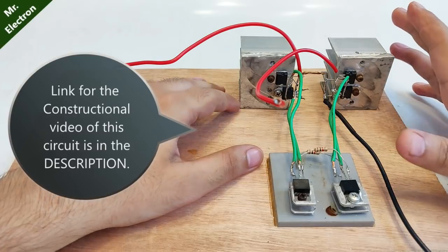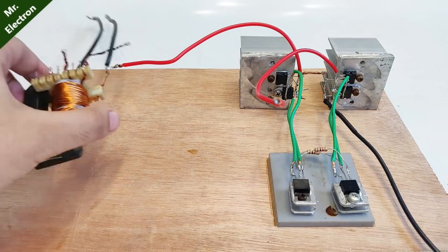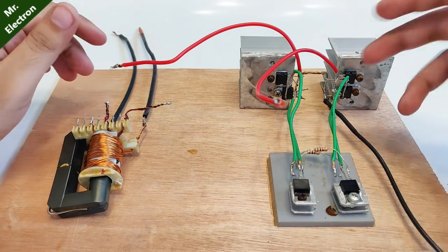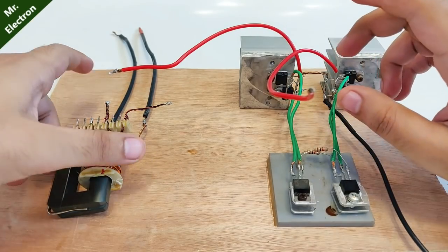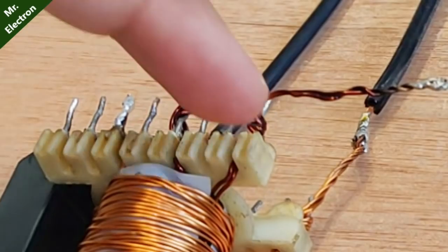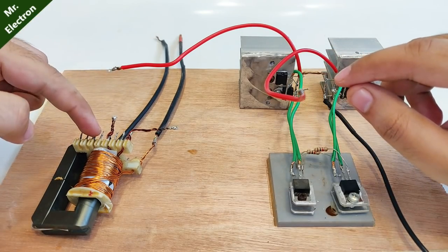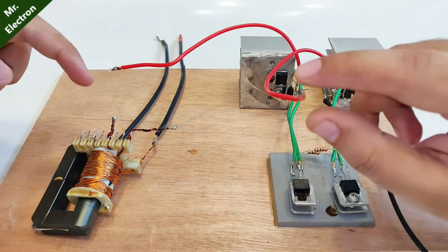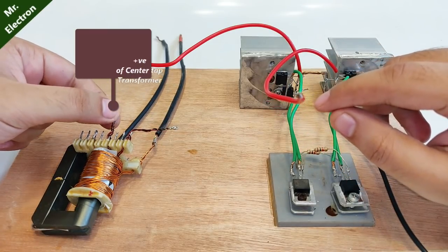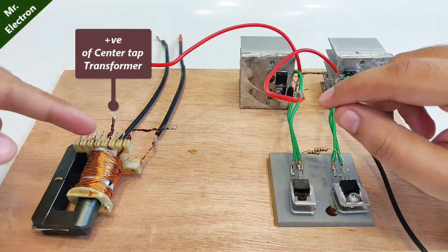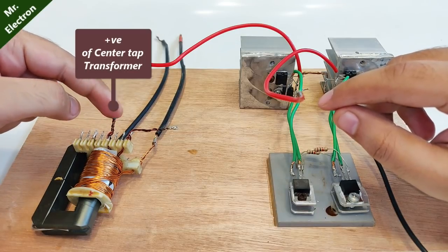Now comes the part of connecting this transformer to the circuit. These two red wires will be connected to the input side. These will be connected to the outer section. We will leave this one, and this one will be connected over here. We'll leave this one because this is the tapping point. It's a center tap transformer, so positive supply will be given at this point.